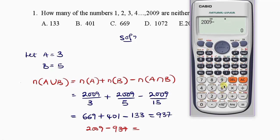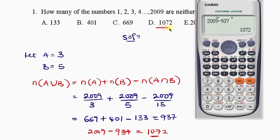2009 minus 937. There you have it. So 1072. Is it in the option? Then this is our answer. D.